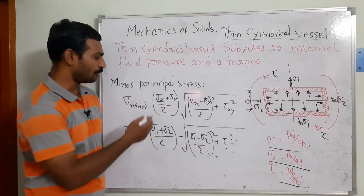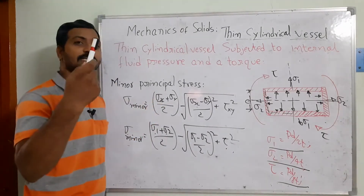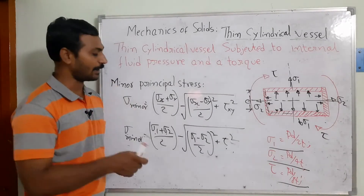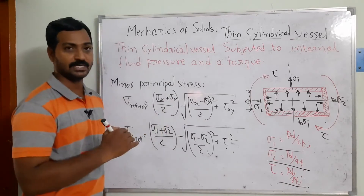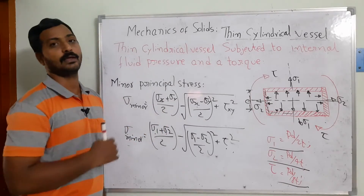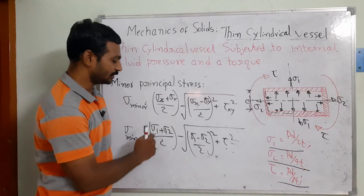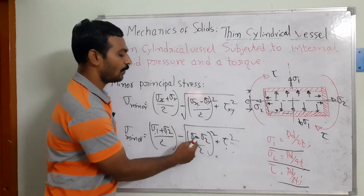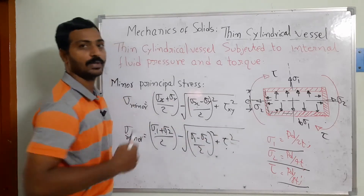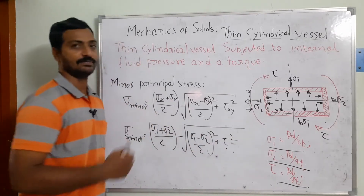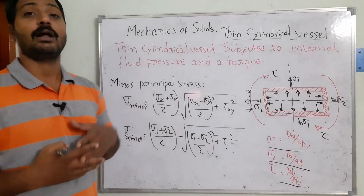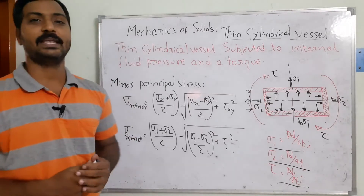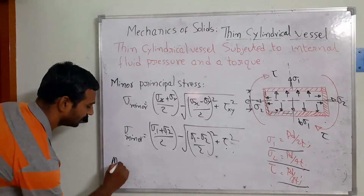For the minor principal stress, σx represents the maximum stress direction and σy the minimum stress direction. The equation becomes: σ_minor = (σ1 + σ2)/2 − √[(σ1 − σ2)²/4 + τ²]. Substituting into this equation gives us the dimensions of the component. Next, we determine the maximum shear stress.